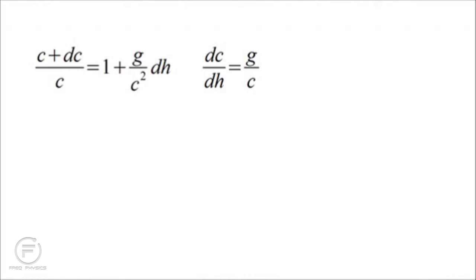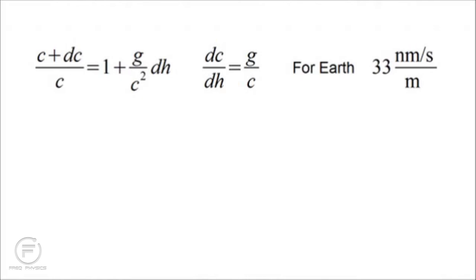For Earth, plugging in 9.8 meters per second squared for g and 300 million meters per second for c, you get 33 nanometers per second per meter. 33 nanometers is about the size of a virus, so the speed of light increases for every meter you go above the Earth by about one virus width per second. That's a very small number, but for a much larger mass, or over a very large distance, you might get very significant changes in the speed of light.